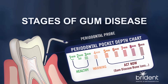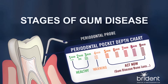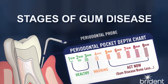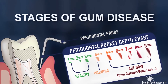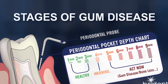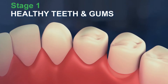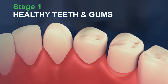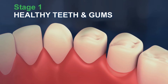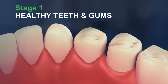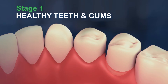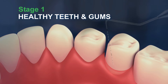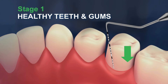Gum disease, or periodontitis, is present in 75% of the adult population and can exist in varying stages of severity. The presence of gum disease is determined during a routine periodontal exam, which includes a gentle probing of the area between teeth and gums, or gum pocket, to measure the depth of the pocket. The deeper the measurement, the more severe the infection.